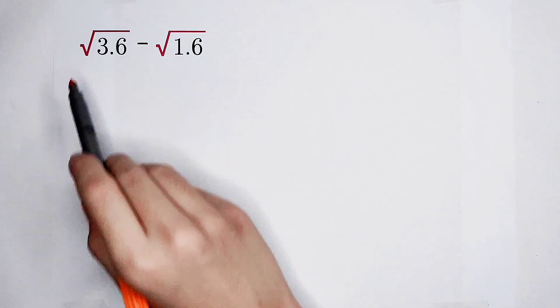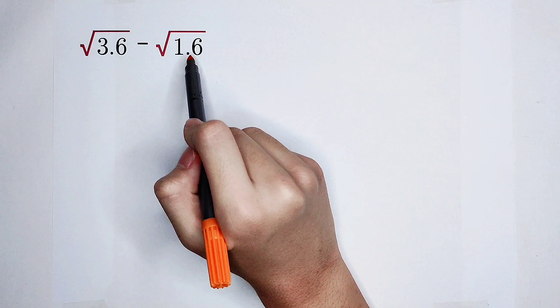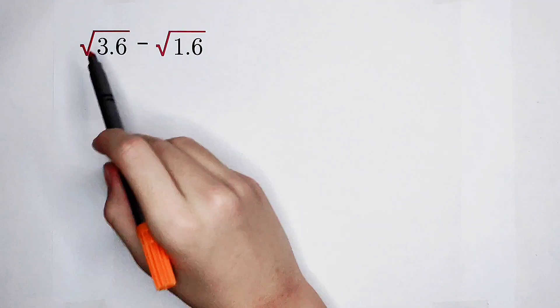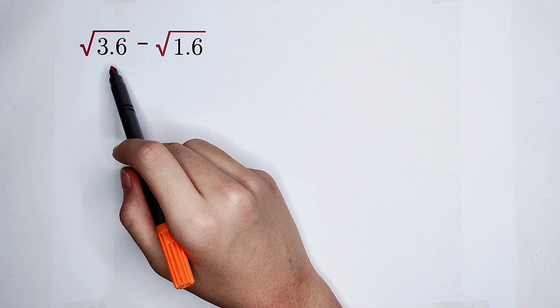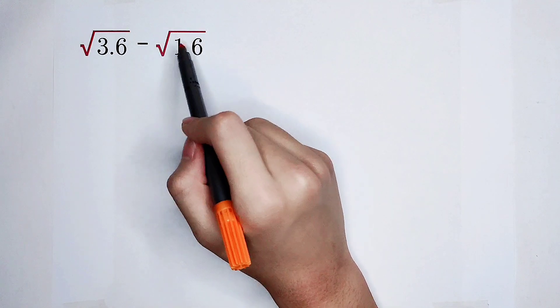But now, here appear two points. And here, 3.6, there's just one digit after the decimal point. 1.6 here also.